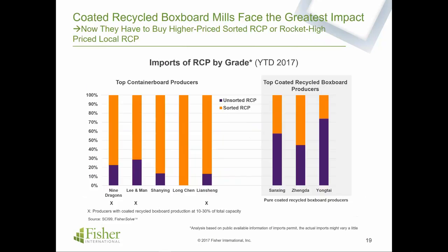This is going to have huge impacts on producers in China. The chart showing imports of recycled paper by grade shows container board producers on the left and coated recycled boxboard — CRB — on the right, shaded by unsorted waste paper in purple and sorted in orange. Although containerboard uses unsorted waste paper, not nearly in the quantities that CRB producers use. These mills are now having to buy very high-priced sorted RCP, or extremely high-priced local waste paper, to run their mills. That starts a speculative frenzy, because the last thing mills want is to shut down for lack of fiber.